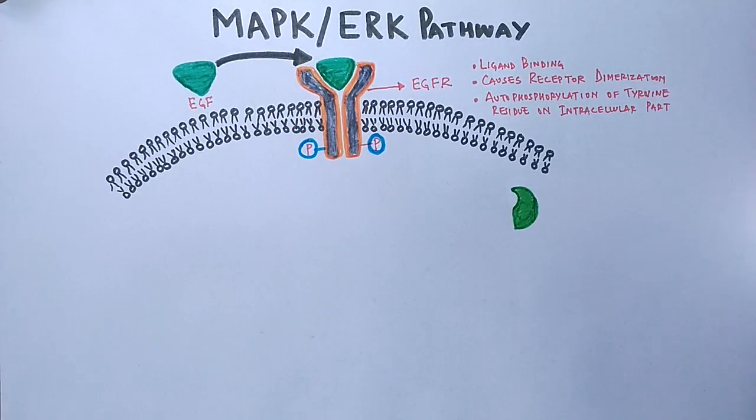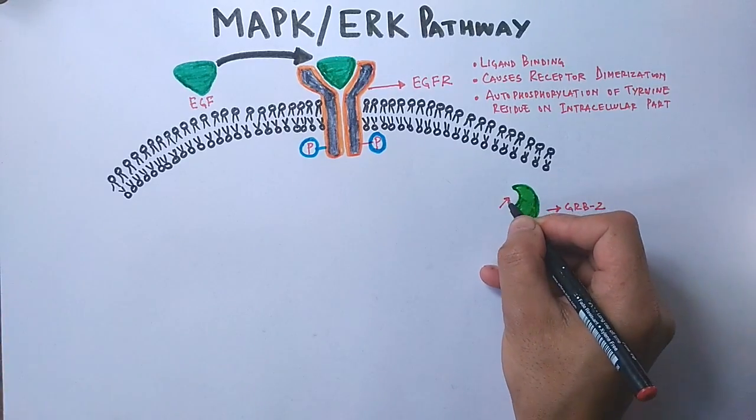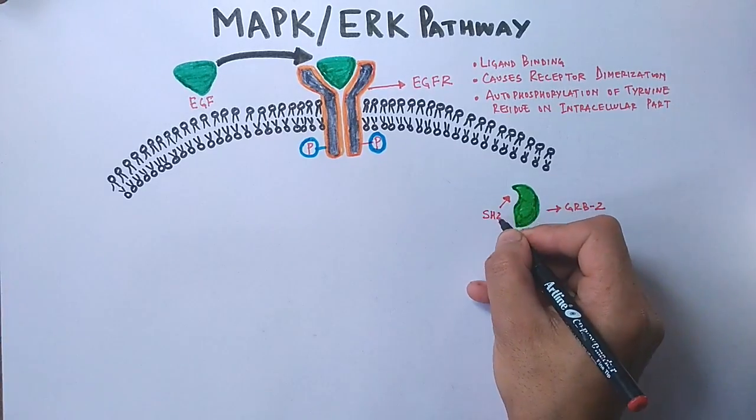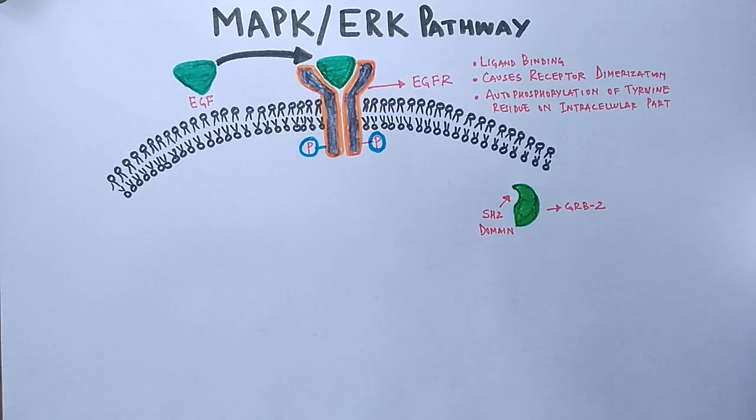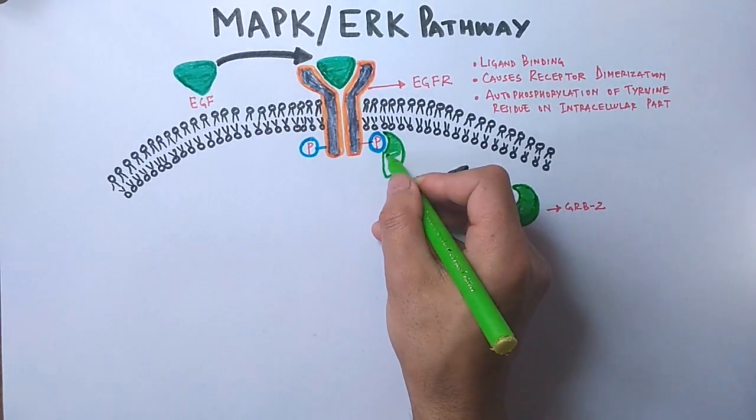The first molecule to be recruited is the adapter molecule GRB2. The GRB2 protein has an SH2 domain as shown in the figure, and this GRB2 protein will dock to the phosphorylated tyrosine through its SH2 domain and get activated.